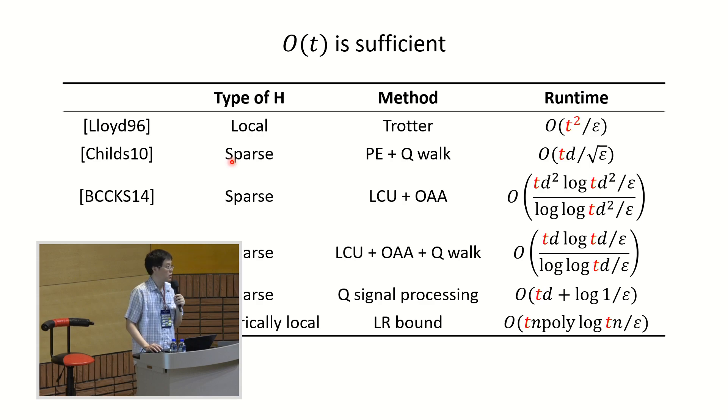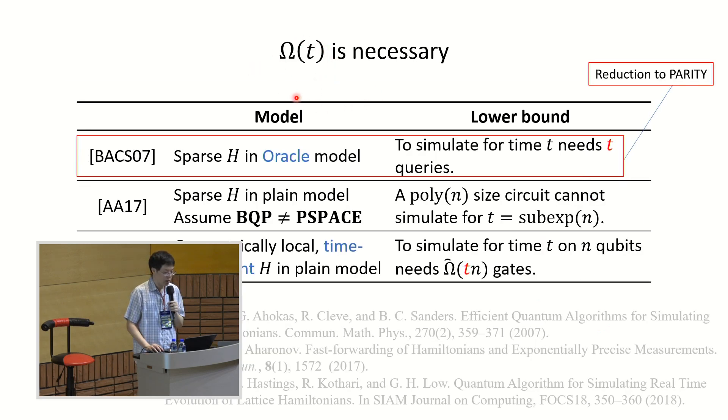As a theorist, now we have an upper bound of linear in T. Then the natural question is what about the lower bound? Do we require omega T time? Can we go faster than linear T? And well, then the answer is here also. So as you see in the slide, it has also been shown that omega T is necessary. And we have three results here, and it's kind of funny.